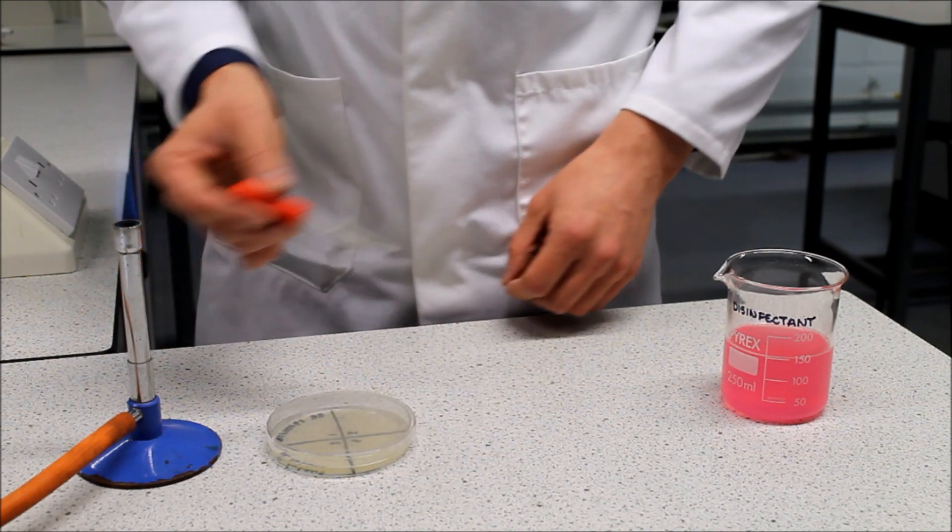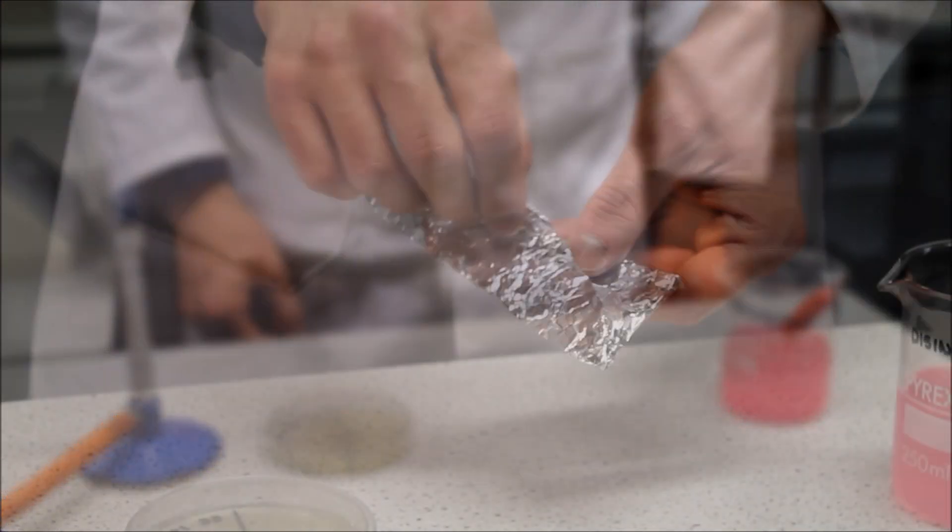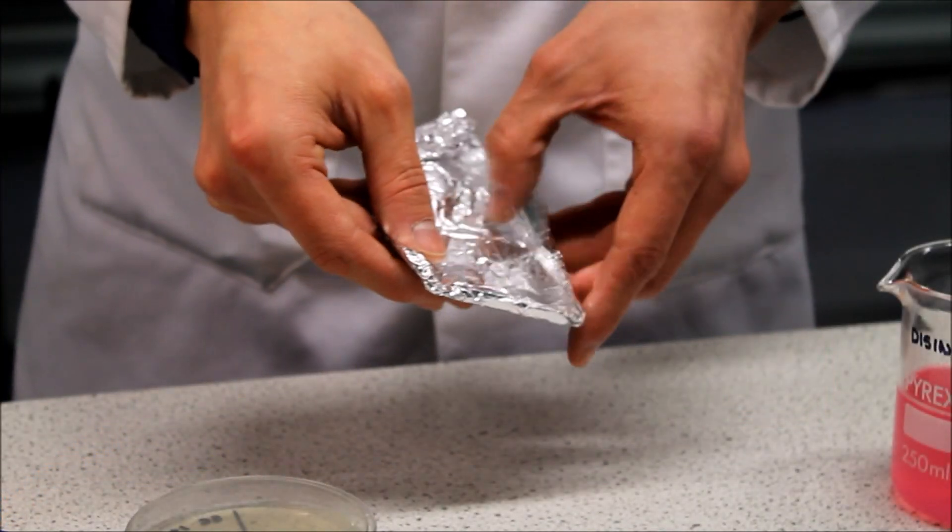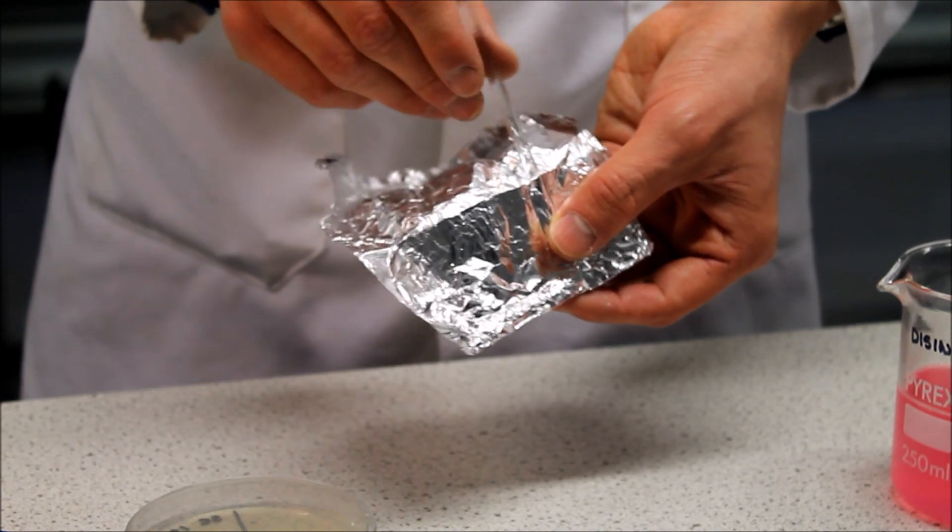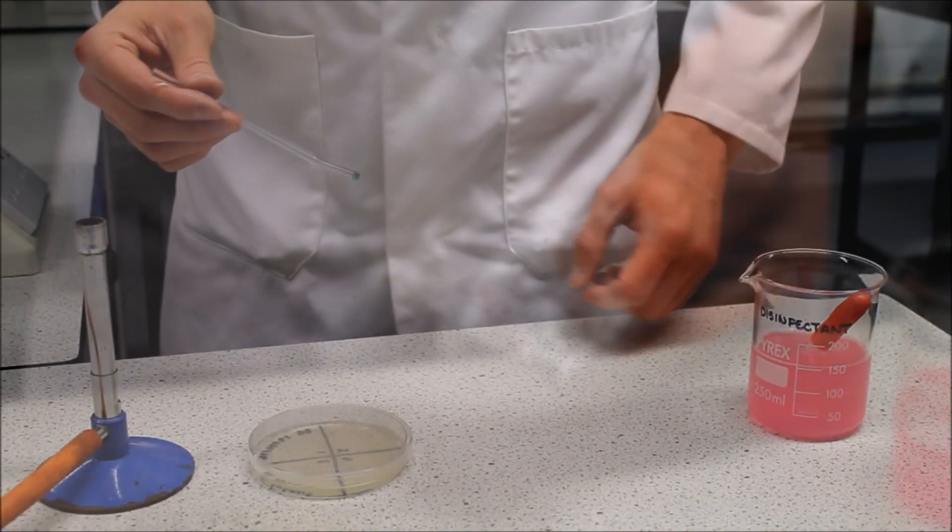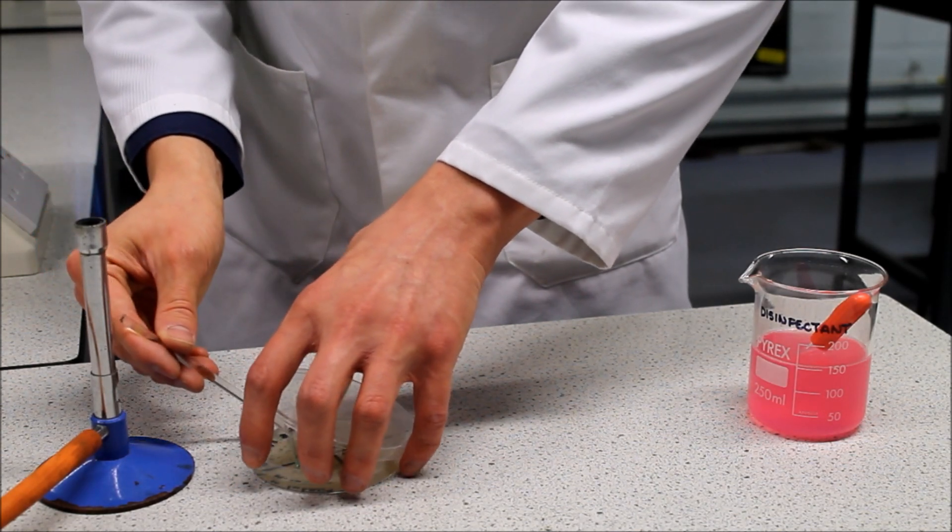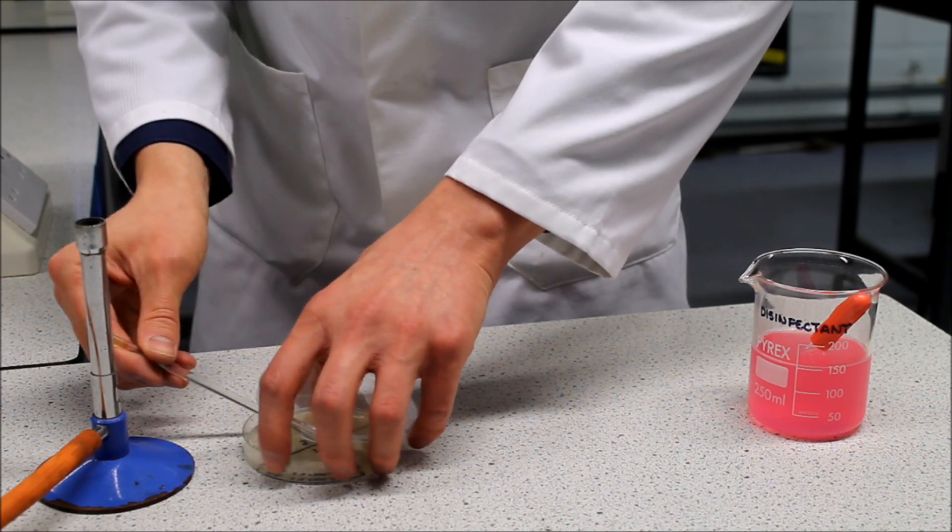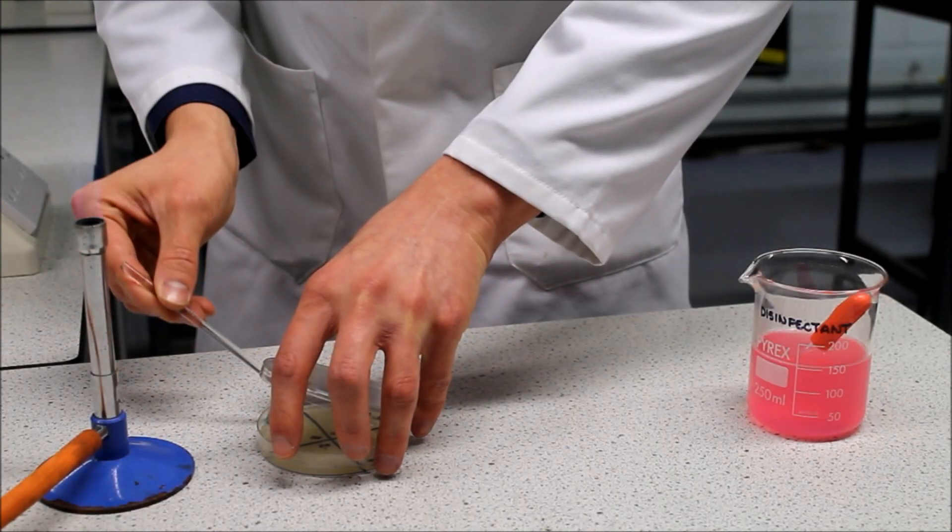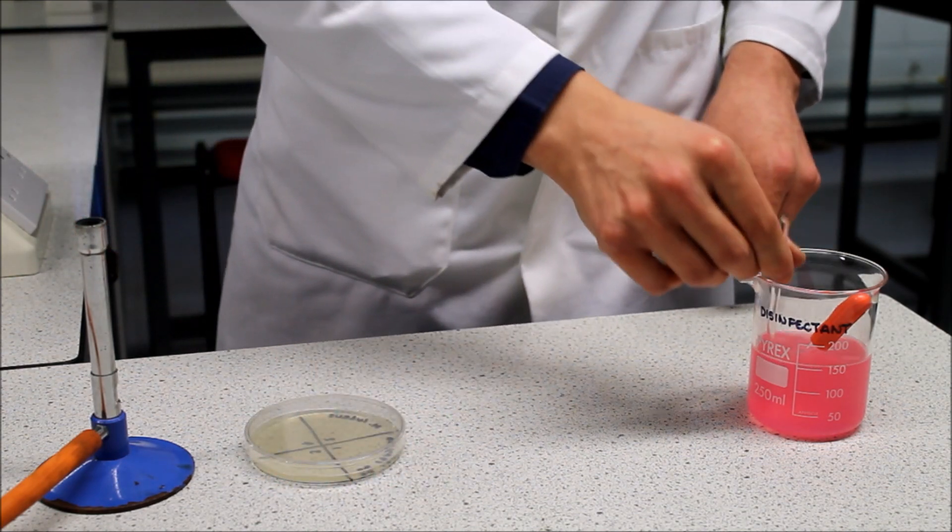Safely dispose of the pipette by placing it into the beaker of disinfectant. Carefully unwrap the spreader but only touch the handle and do not put it down as this will contaminate it. Again slightly lift the lid of the agar plate at the side nearest the Bunsen burner and spread the bacterial culture all over the surface of the agar using the spreader. Replace the lid and safely dispose of the spreader by putting it into the beaker of disinfectant.